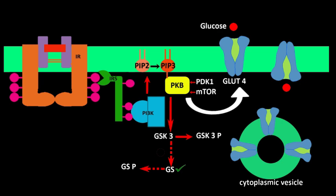Glycogen synthesis is carried out by glycogen synthase and is controlled by negative regulation. The negative regulator here is glycogen synthase kinase 3, GSK3. GSK3 phosphorylates and inactivates glycogen synthase — so phosphorylation in this case means inactivation, resulting in no glycogen synthesis.